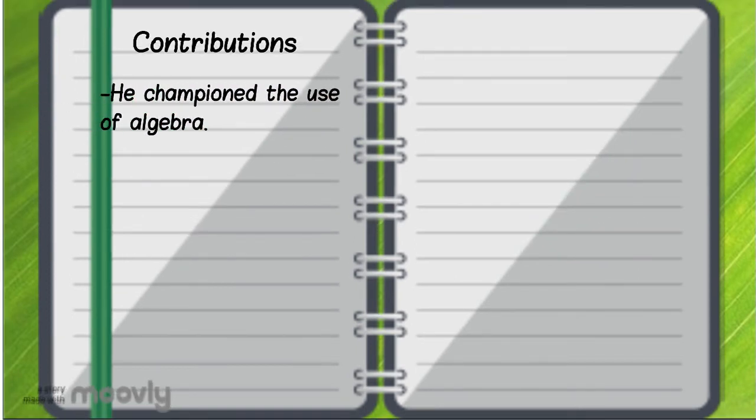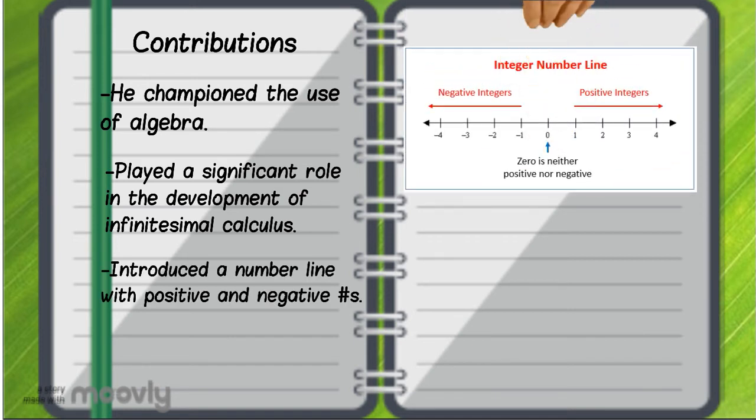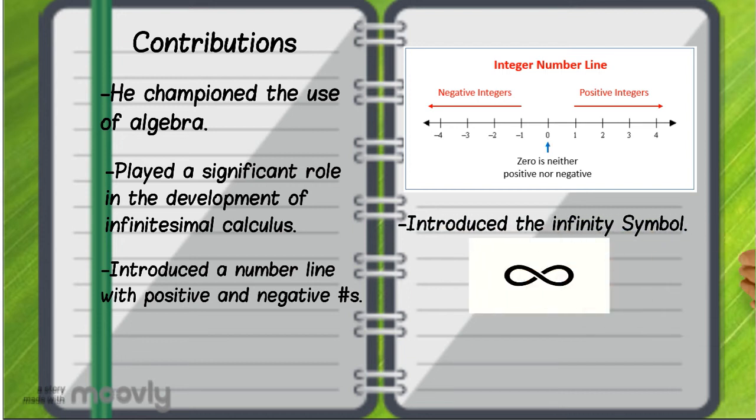Now let's talk about his contributions. He championed the use of algebra. He played a significant role in the development of infinitesimal calculus. He introduced a number line with positive and negative numbers. He introduced the infinity symbol. And he came up with the theorem of power rule for rational exponents.